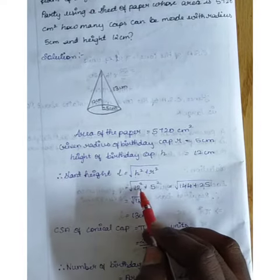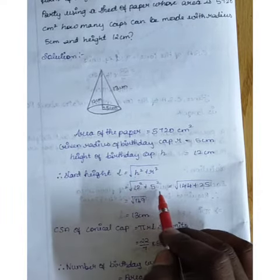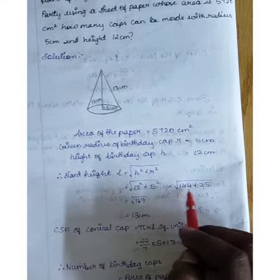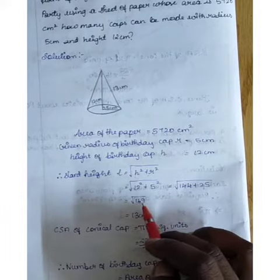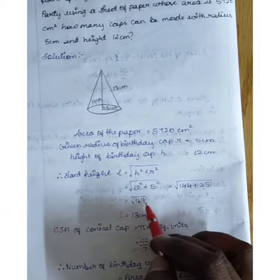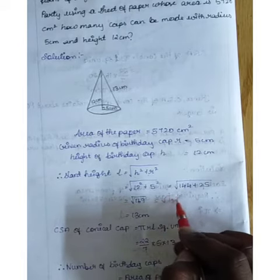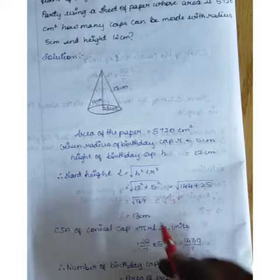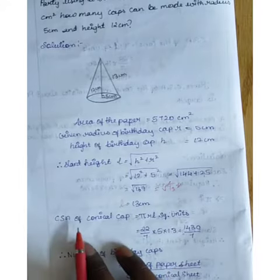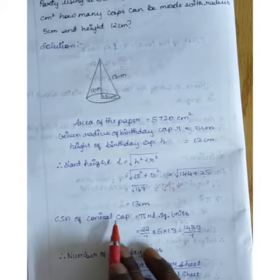Substituting the values: l = √(12² + 5²) = √(144 + 25) = √169 = 13 cm. So the slant height equals 13 cm.